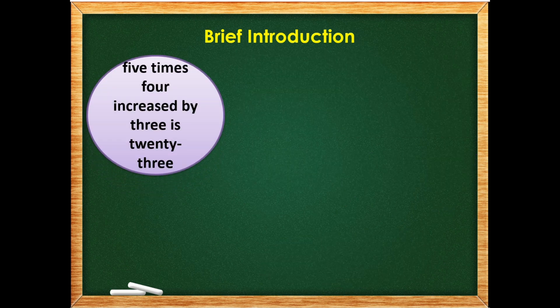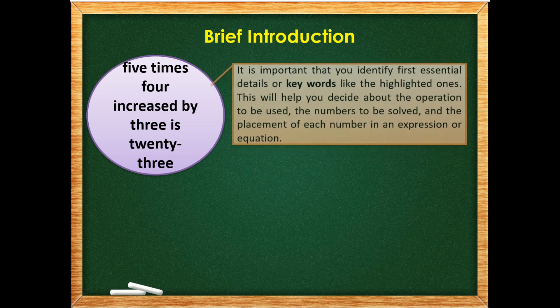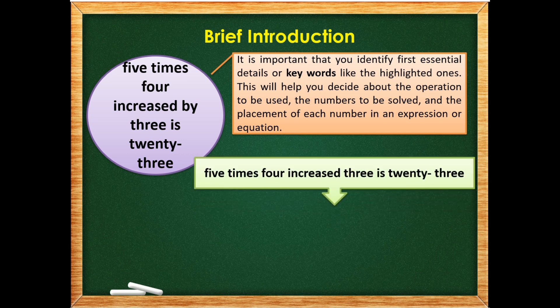Let's proceed to example number two. 5 times 4, increased by 3, is 23. So again, it is important that you identify first essential details or keywords like the highlighted ones. So this will help you decide about the operation to be used, the numbers to be solved, and the placement of each number in an expression or equation. So the following highlighted words are: we have 5 times 4, increased 3, is 23.